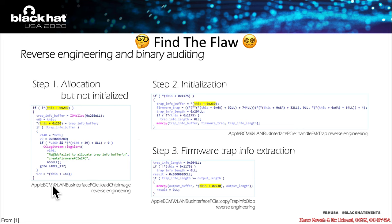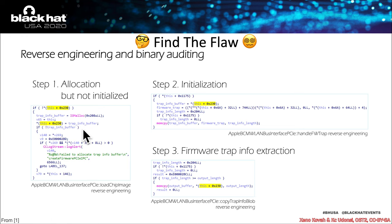This pseudocode is from Apple BCM Broadcom WLAN bus interface PCIe — specifically 'load chip image.' This one's from 'handle firmware trap,' and this one's from 'copy trap info blob.' The basic idea is that the first function is called first and does allocation of some trap info buffer, this function does initialization of that buffer, and this function ultimately copies data back out from that buffer that has been initialized in the prior step.